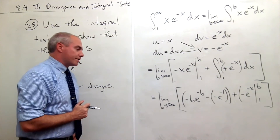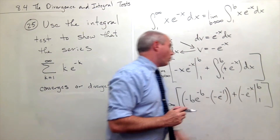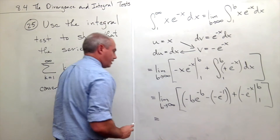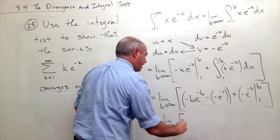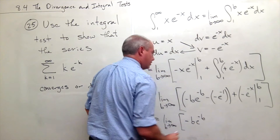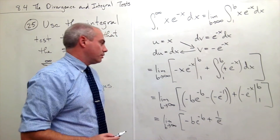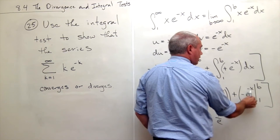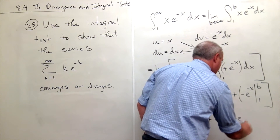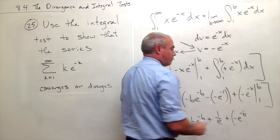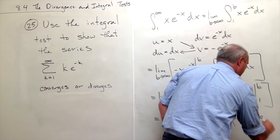Plugging in B and 1, I get the limit as B goes to infinity of: negative Be to the minus B, plus e to the minus 1 (which is 1 over e), then minus e to the minus B, minus the quantity minus e to the minus 1, which gives plus another e to the minus 1.